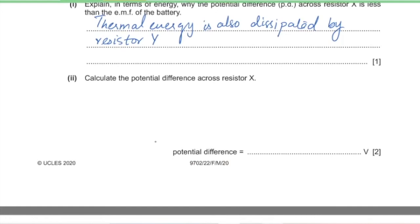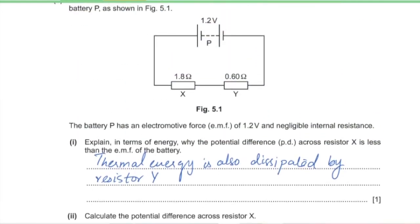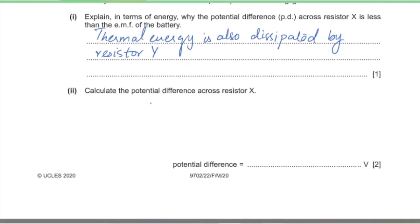Part 2: calculate the potential difference across resistor X. In a series circuit, EMF = PD across X + PD across Y. Using the same current through both: 1.2 = I × 1.8 + I × 0.6 = I × 2.4, so I = 0.5 A. PD across X = 0.5 × 1.8 = 0.9 volts.